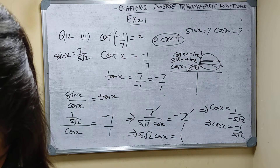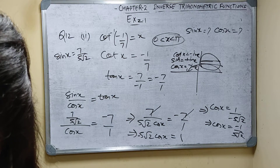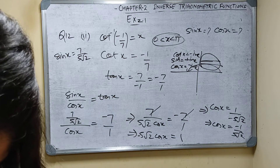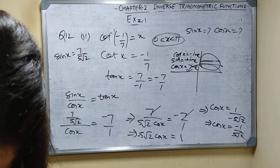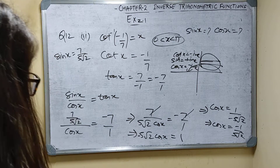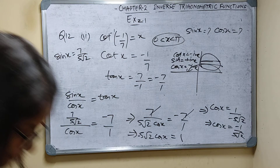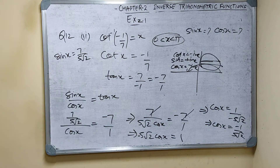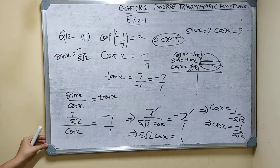Therefore cos x equals minus 1 upon 5 root 2 and sin x equals 7 upon 5 root 2. Like this you have to solve.